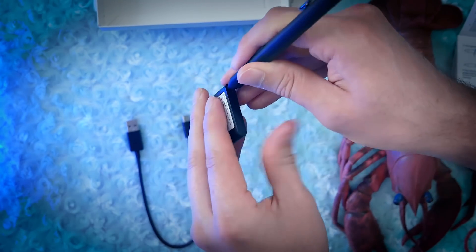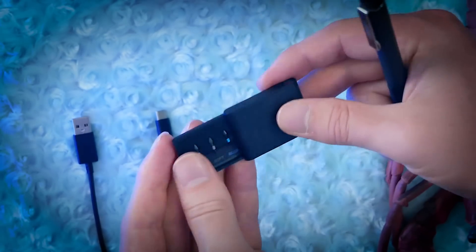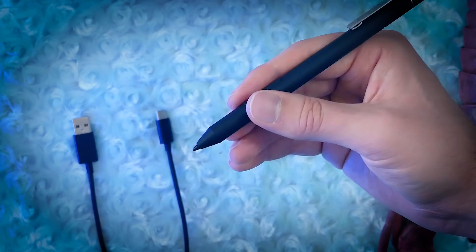If you want to swap out the nibs, you can use this little hole on the side of your nib case to pull the nib out. And you can swap it out with one of the other nibs to change the feel of the pen and make it softer or firmer.